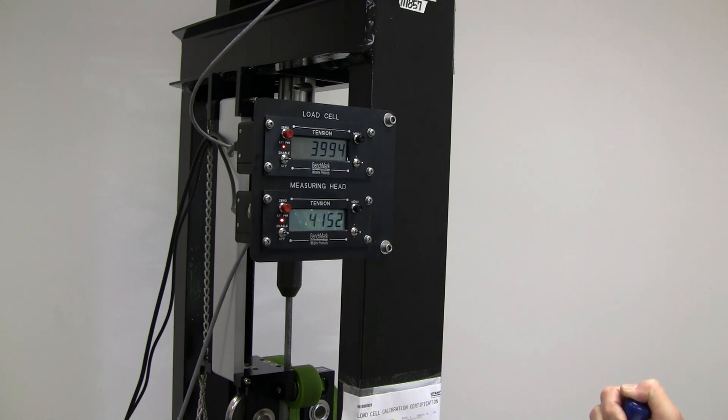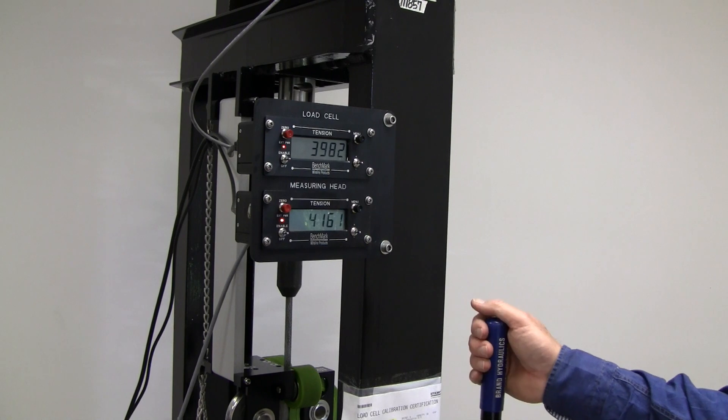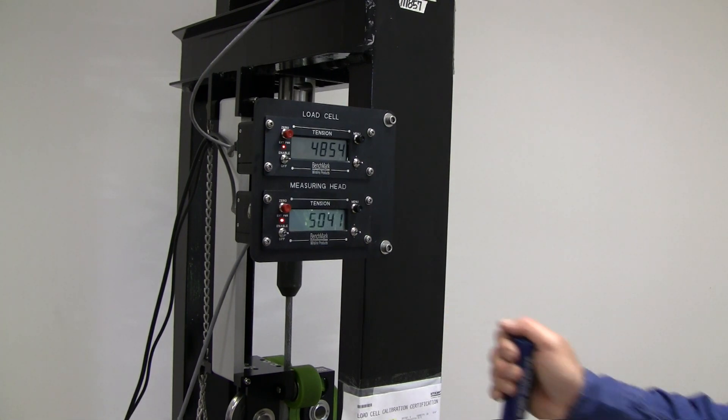Now repeat the same process for 4,000 pounds and write down that number. In this example, the pressure number stopped at 4,001 on the load cell and was allowed to bleed down to 4,000. At that point, the corresponding load pin number was 4,168. The numbers 4,000 and 4,168 are recorded.